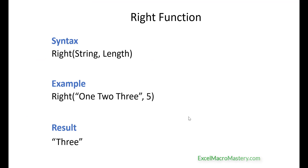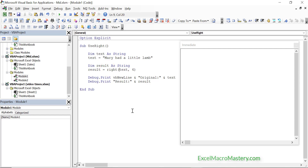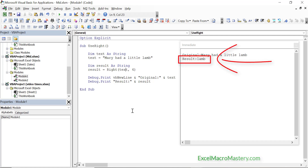Right is also very straightforward. It is very similar to left. The difference is that it extracts characters from the right side of the string rather than the left. Right takes the same parameters as left — it takes the string to extract from and the number of characters that you wish to extract. Let's change the code that we were using with left. We replace the left function with the right function and set the length to 4. Let's run this code and you can see that it returned the last 4 characters of the string.